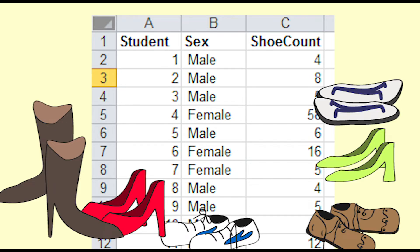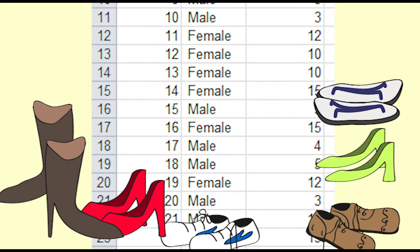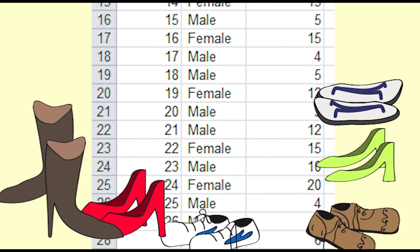We will illustrate this with a shoe example we have used in several of our videos. Each value in this data set is the number of pairs of shoes a student said he or she owned. We want to know how spread out the data is.